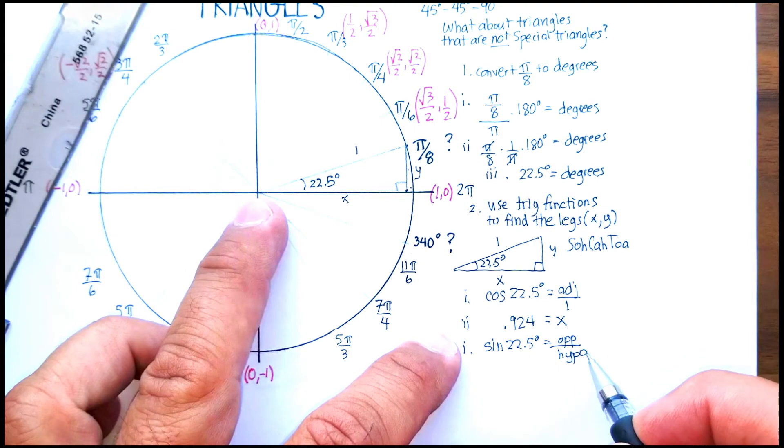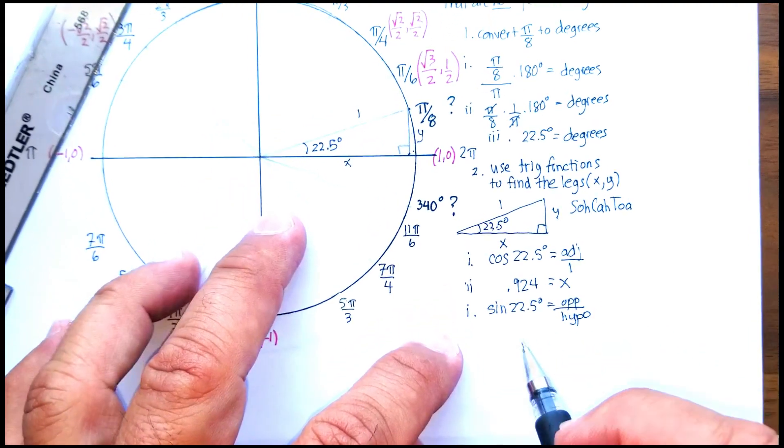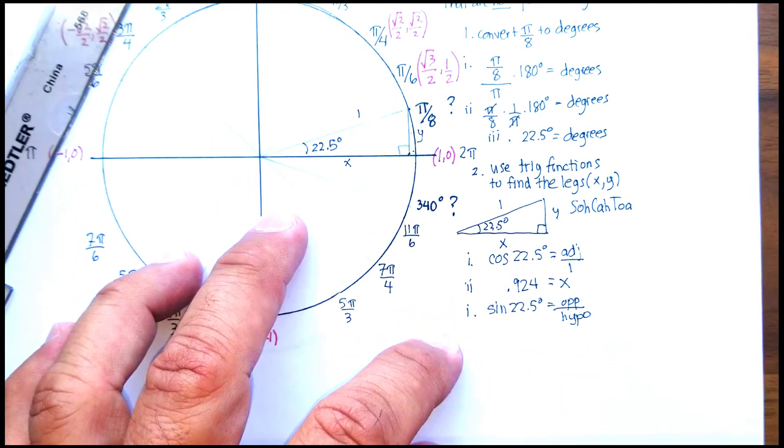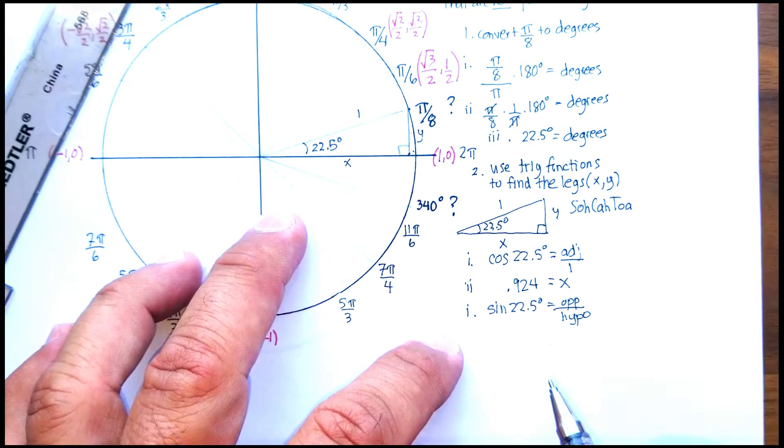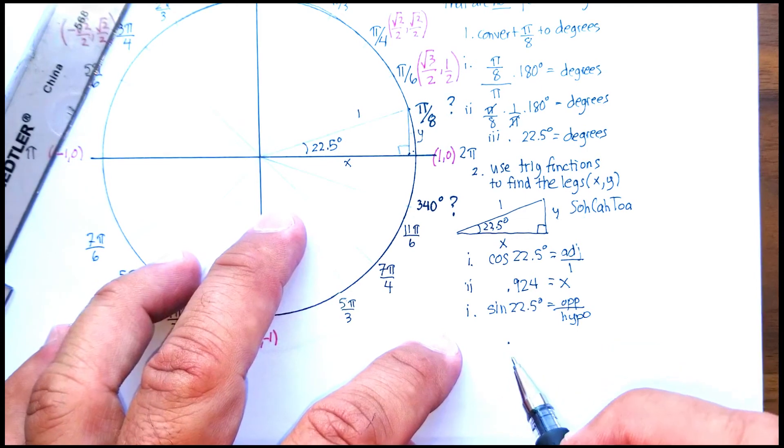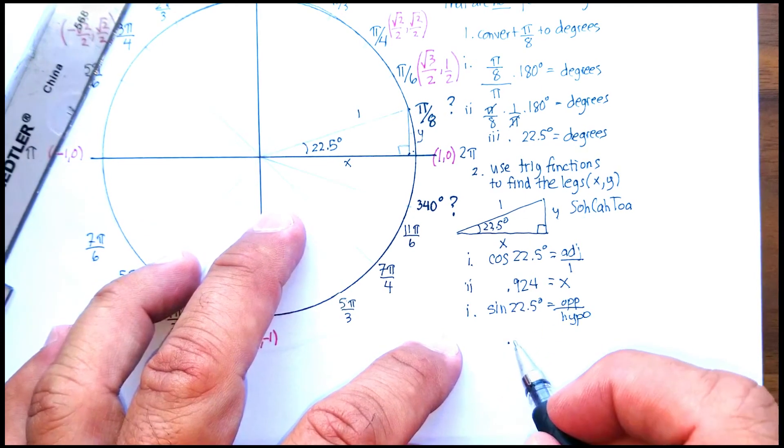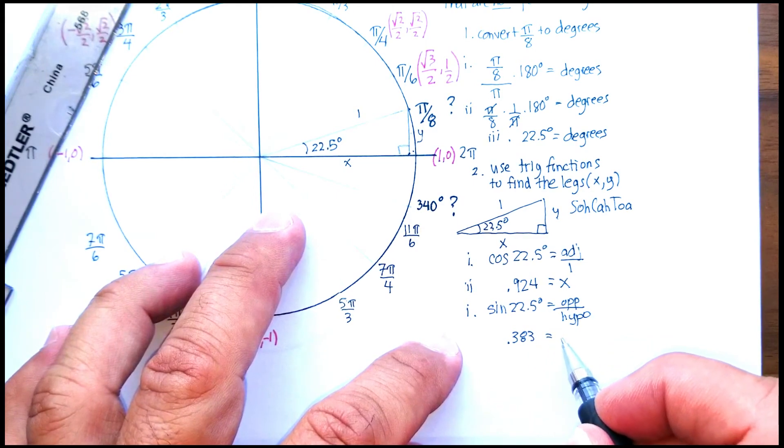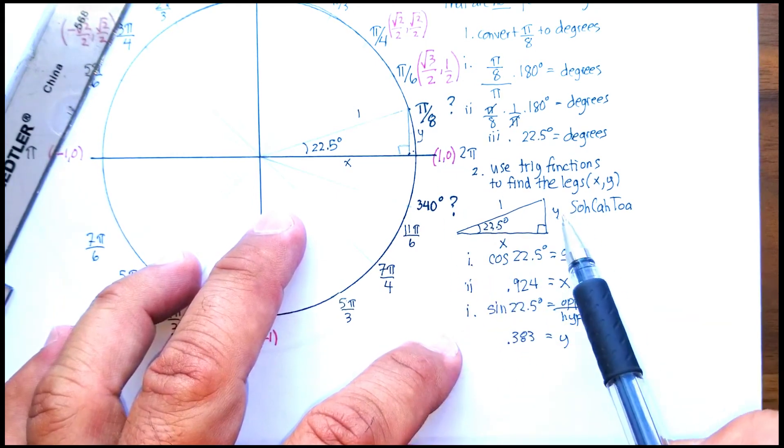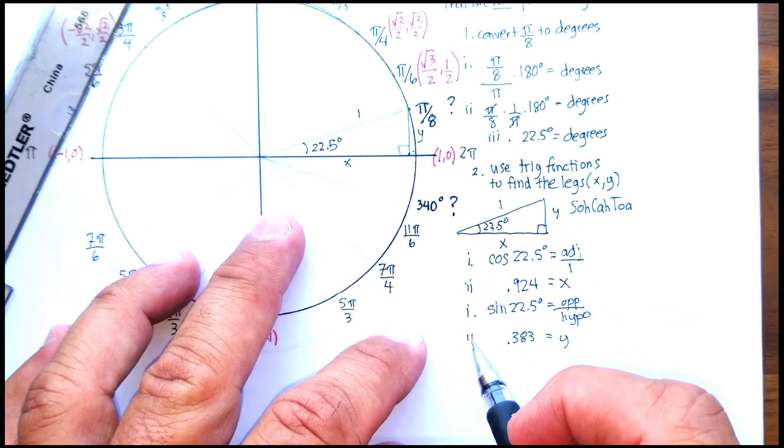Remember, hypotenuse is 1, so the sine of 22.5° is going to be equal to 0.383—again, to three values—and that will be equal to our y value. There we go.